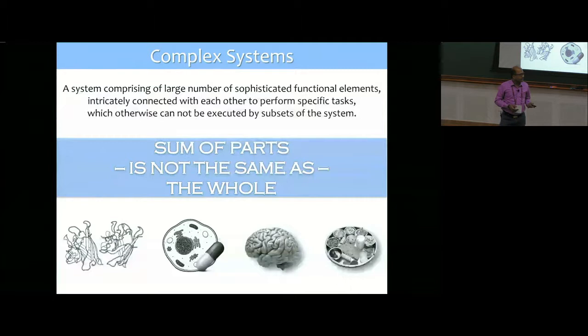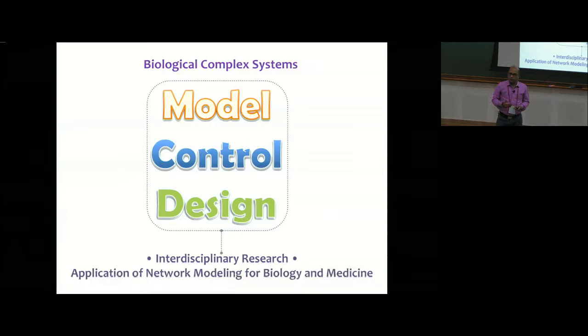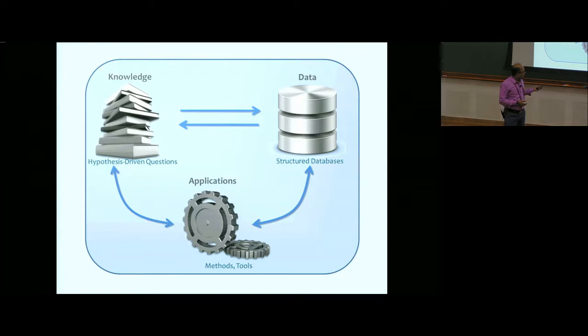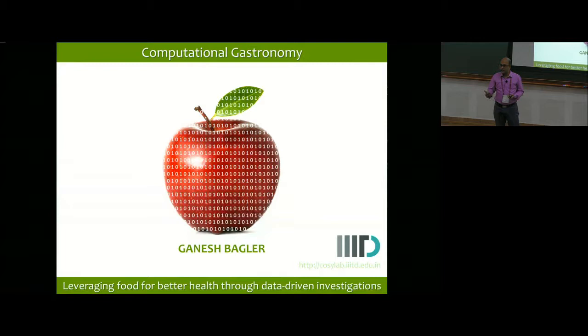I have been using an approach of understanding these complex systems, modeling them using mathematical and computational frameworks, and finding ways of controlling them whenever possible. A larger viewpoint is that of learning from biological systems so that we can design engineered systems that are as robust as biological systems tend to be. At the core, the philosophy has been to ask hypothesis-driven questions, build secondary data structures where necessary, and come up with applications. Computational gastronomy looks at various aspects of food—culture, recipes, ingredients, nutrition, taste, and health.